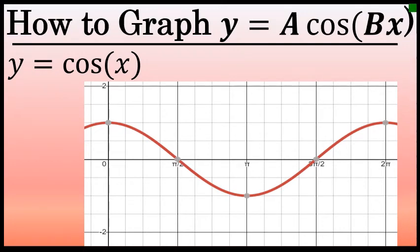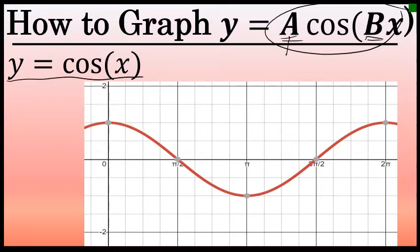Graphing an equation in the form y equals a cosine bx, where a is any non-zero value and b is any positive real number, is fairly easy if you have a good understanding of the properties of the graph of y equals cosine of x. In this video, I will graph three equations that have the form y equals a times the cosine of bx. This process can be used to graph any equation having this form.